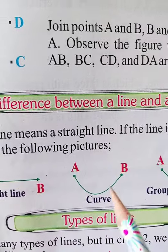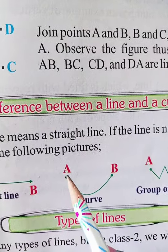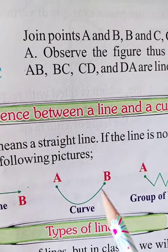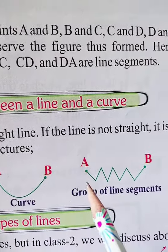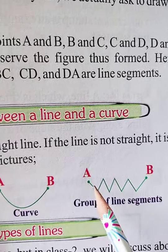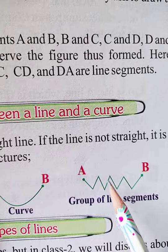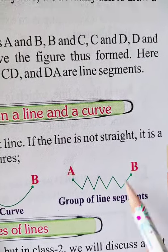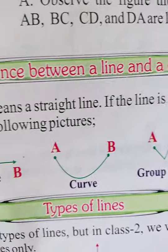Look at the following pictures. The line which is not straight is called a curve line. And a group of line segments — these are your line segments, because they are made of straight lines.